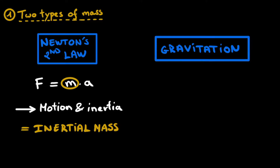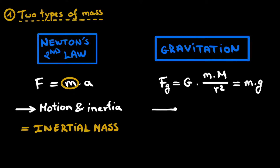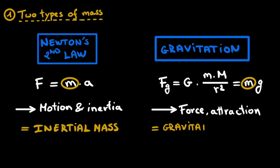On the other hand, we have the force of gravitation, of which we know that the magnitude can be written as a constant G times the multiplication of two masses divided by the square of the distance between them. Here on Earth, we can rewrite this formula as simply the mass of the falling object multiplied by the gravitational constant small g. This is a formula that describes the fundamental force of gravity, or the way that objects with a certain mass attract each other. That is why the mass in this formula is called the gravitational mass — the property that makes objects attract each other. In a sense, the gravitational mass is the charge of the force of gravity.